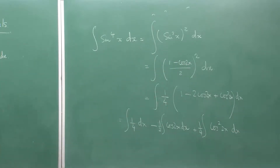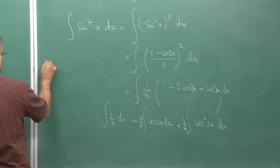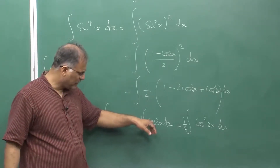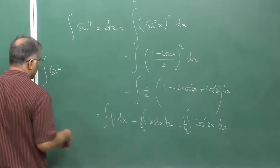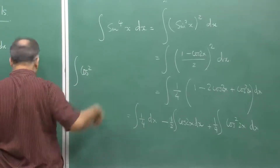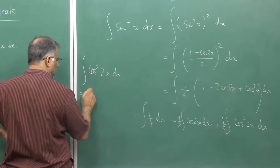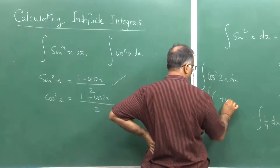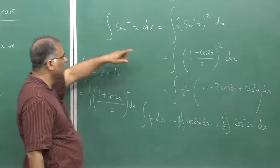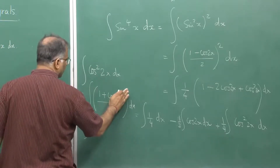For cos²(2x), use the formula cos²θ = (1 + cos2θ)/2, so cos²(2x) = (1 + cos4x)/2. This reduces the power from a square of a square down to just a square. Then it simplifies to (1/2)∫dx + (1/2)∫cos4x dx — standard results which you can write from high school formulas.